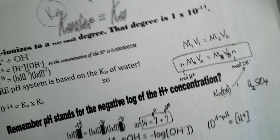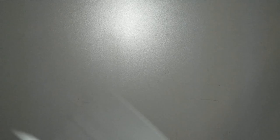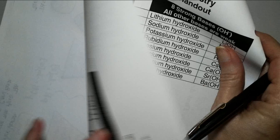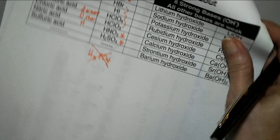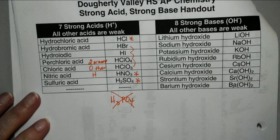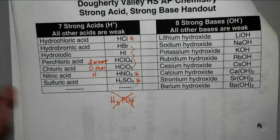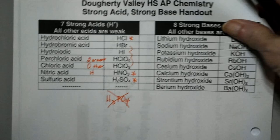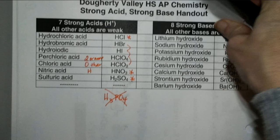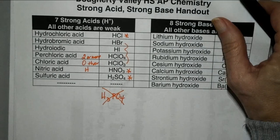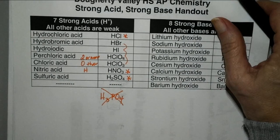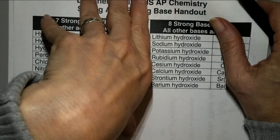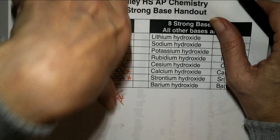On page 10, you have a list of strong acids and strong bases — you need to stick those in your brain. Unfortunately, you're just going to have to know that stuff. Make yourself a note, grab a post-it note, stick it on here — something so it stands out. Do something so you remember you need to memorize these things.